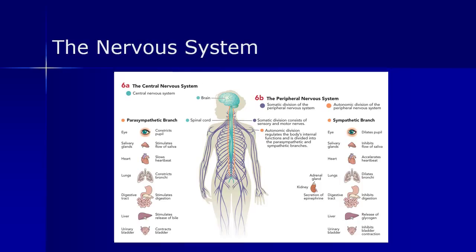The autonomic nervous system is further divided into two branches: the sympathetic branch and the parasympathetic branch. When the sympathetic branch gets activated, it's usually in response to some kind of threat the body processes as an emergency — heart rate increases, pupils dilate, digestion slows or stops, and resources are used to either fight or flee. The function of the parasympathetic branch is to calm us after the crisis or danger has passed. To remember the difference, you can think of the parasympathetic branch as a parachute coming down — calming the body after an exciting jump out of a plane.